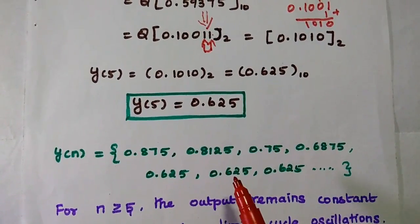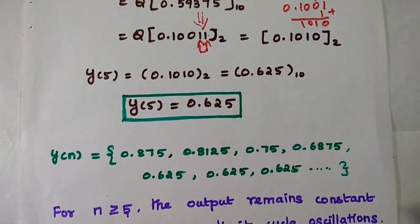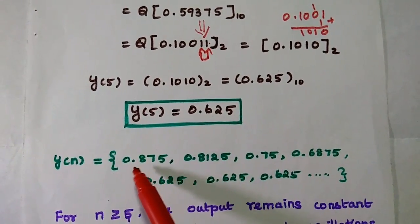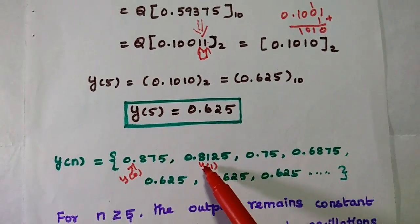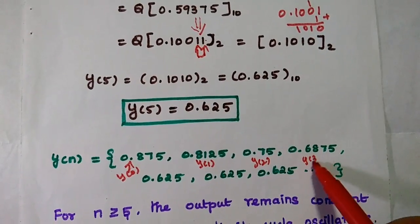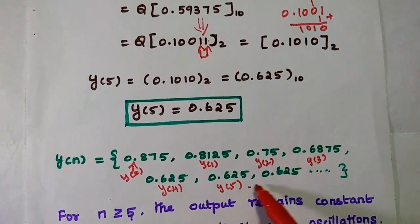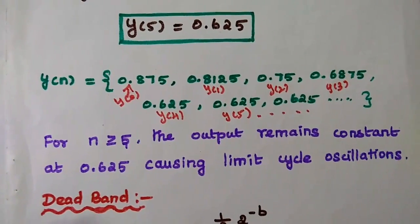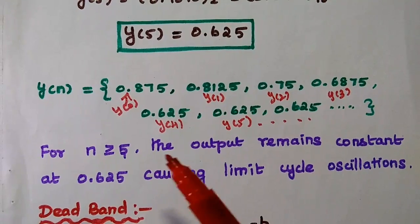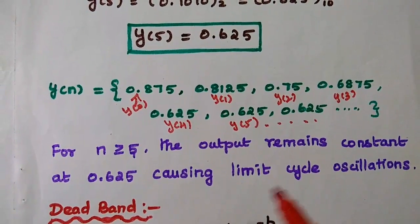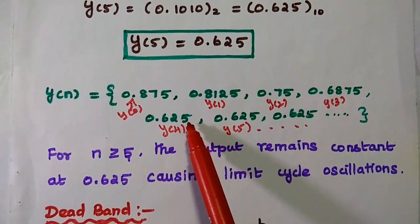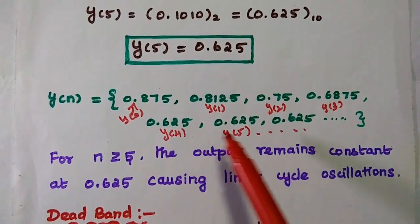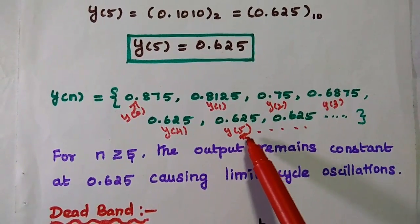From this we observe that from n equal to 4 onward the value is 0.625, and from n equal to 5 the same value is repeated. So the sequence is: y(0)=0.875, y(1)=0.8125, y(2)=0.75, y(3)=0.6875, y(4)=0.625, and from y(5) onwards all values remain 0.625. This is called limit cycle oscillation. For n greater than or equal to 5, the output remains constant at 0.625, causing limit cycle oscillation.